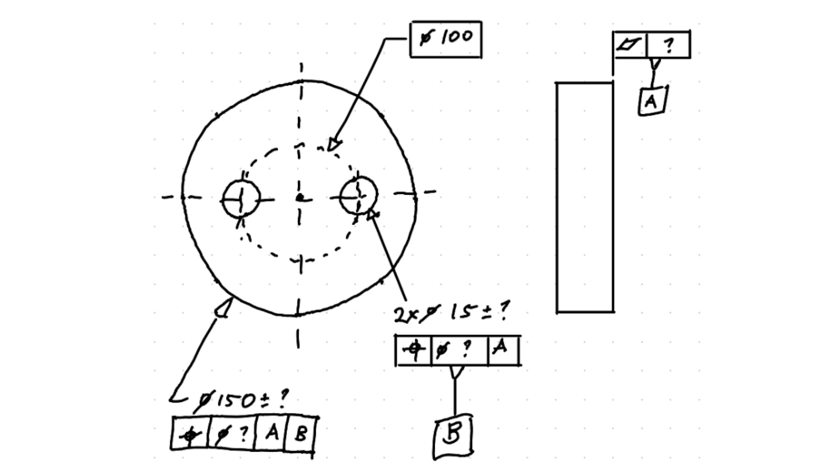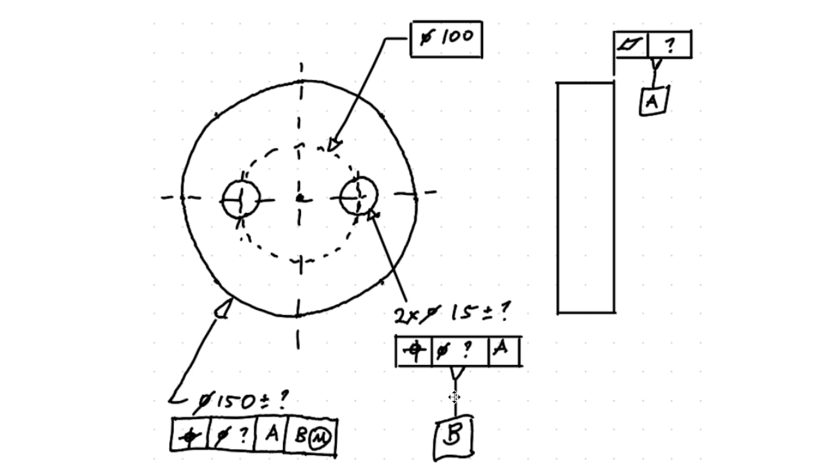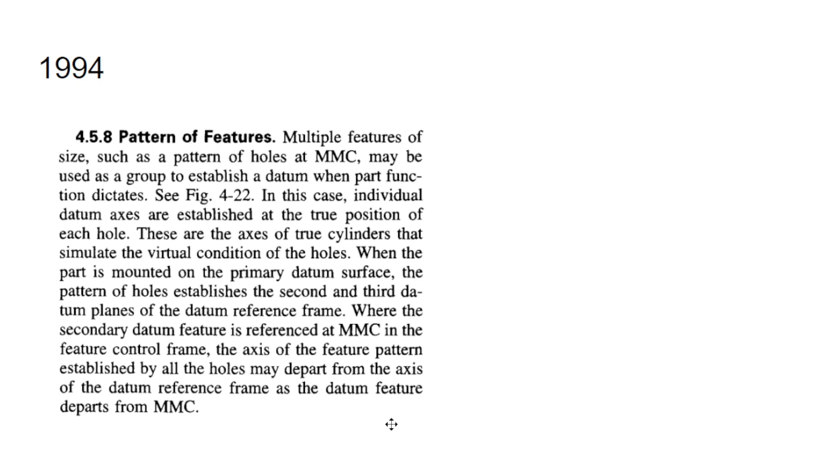There are sort of two ways in the current standard that you can do it: you can either reference the pattern of holes at RMB or you can do it at MMB. There have been changes over the years. When the 1994 standard was released, you were only allowed to do a pattern of features as a datum at what they called MMC, but it's now what we call MMB.